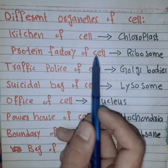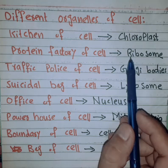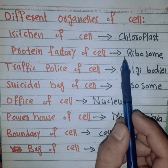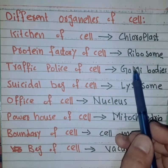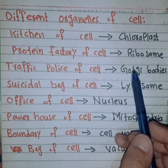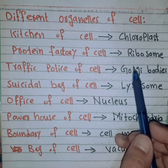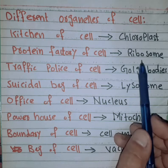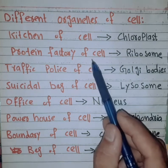The ribosome is the protein factory of the cell. For example, just as we have a plastic factory or a mobile factory, the ribosome is the protein factory of the cell.